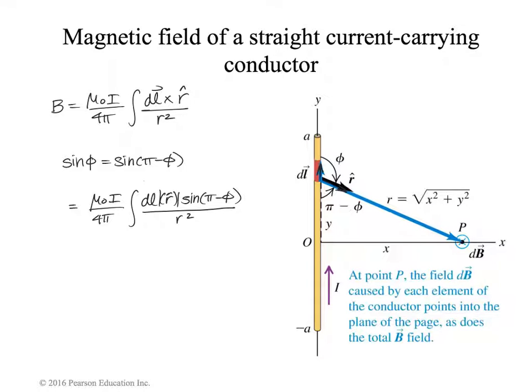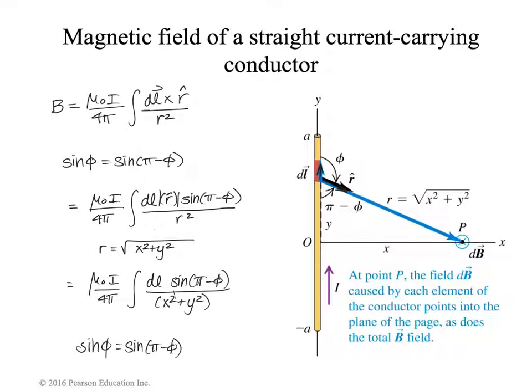Now we do notice that we're going to write r as the square root of x² plus y². x is the perpendicular distance from the wire. y is the vertical location that we are along the piece of wire. And so that's going to change this to μ₀I over 4π, dℓ sine of π minus φ over x² plus y².